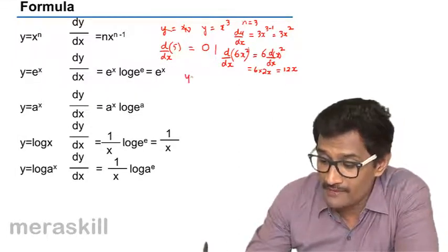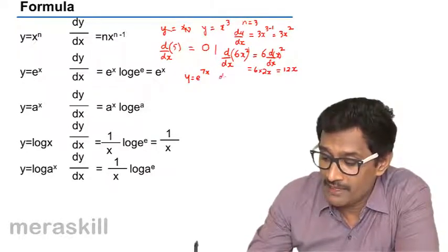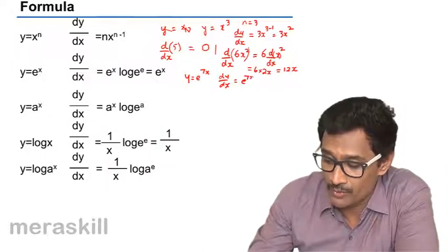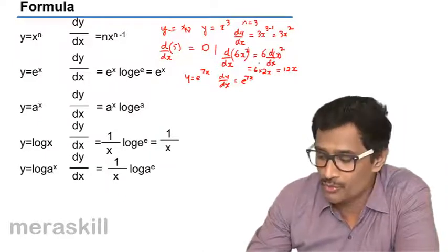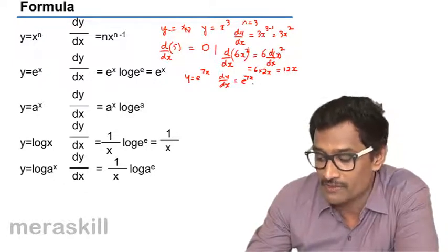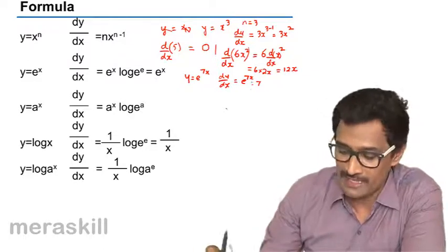But suppose you have y equals e^(7x). Will dy/dx also be equal to 7e^(7x)? No. Here we will use another rule. After you find this, we need to find the derivative of this also, hence it will be into 7. We will be coming across these cases later on.